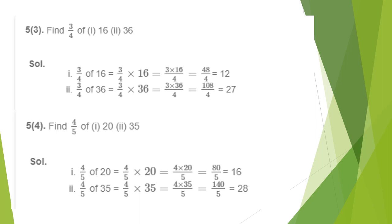Question 5, fourth part: find 4/5 of 20. Converting 'of' to multiplication: 4/5 × 20 = 4 × 20 ÷ 5. Since 5 is common in numerator 20 and denominator 5, cancelling gives 4 × 4 = 16. Next: 4/5 of 35, which is 4/5 × 35. Applying the rule, multiply numerator with the whole number and keep the same denominator. Since 5 is common in numerator and denominator, cancelling gives 4 × 7 = 28.